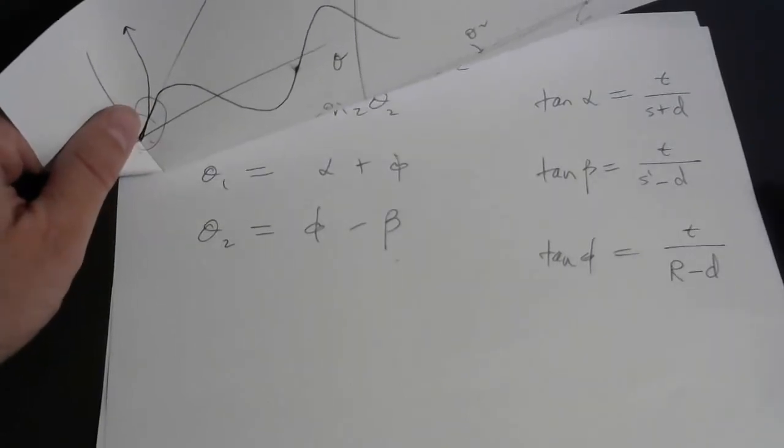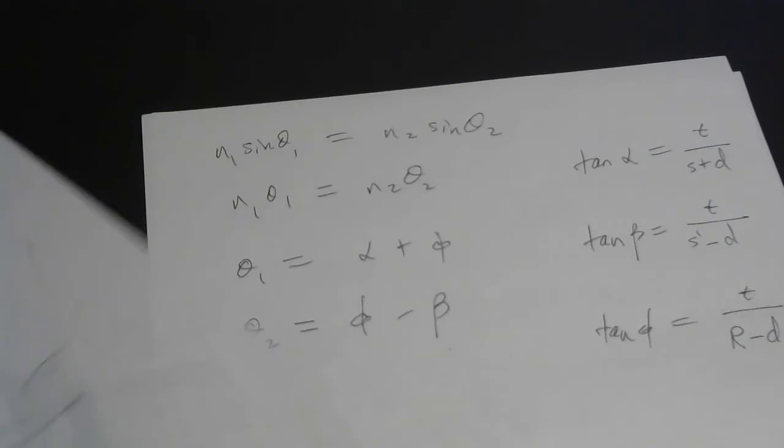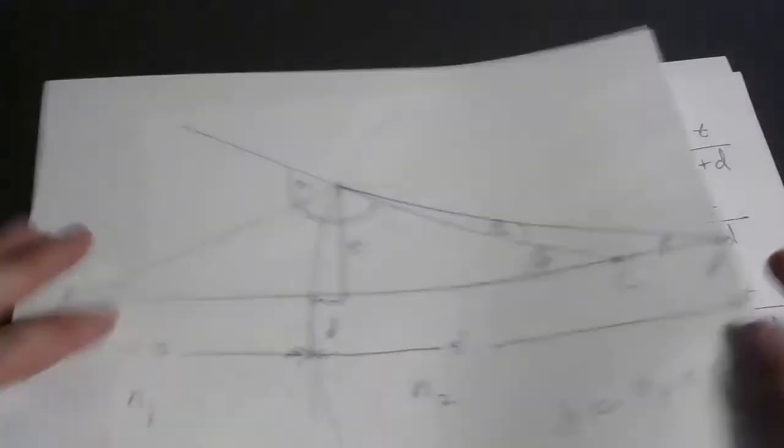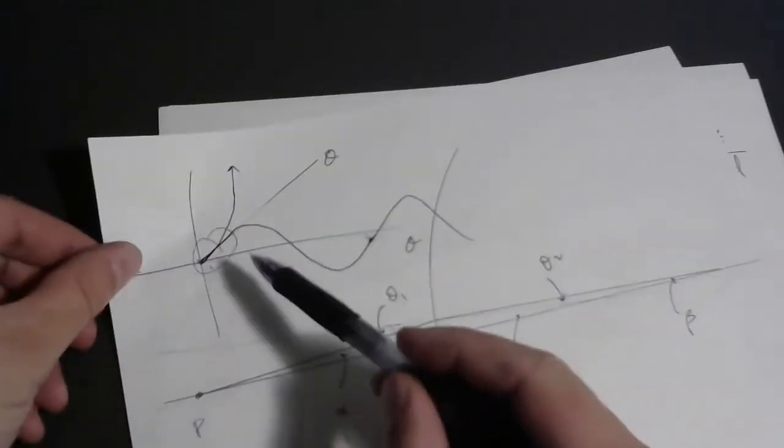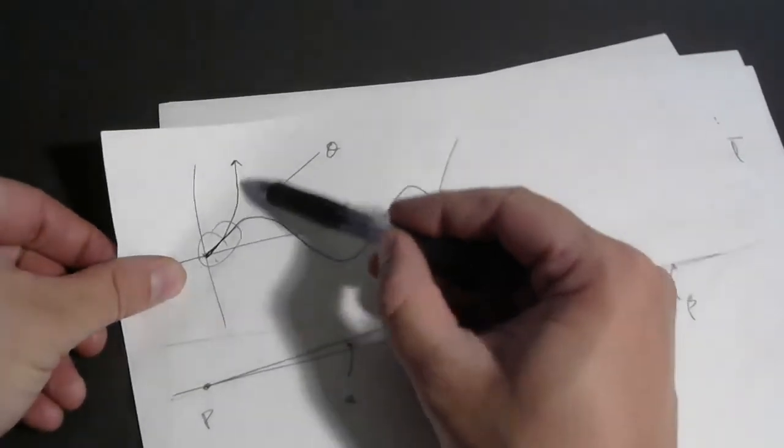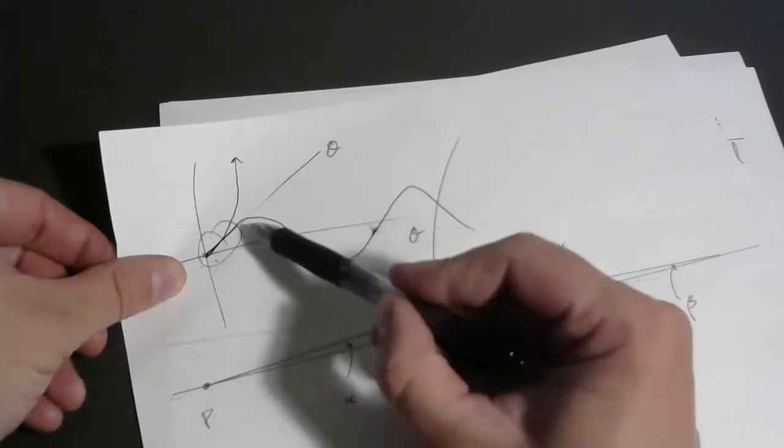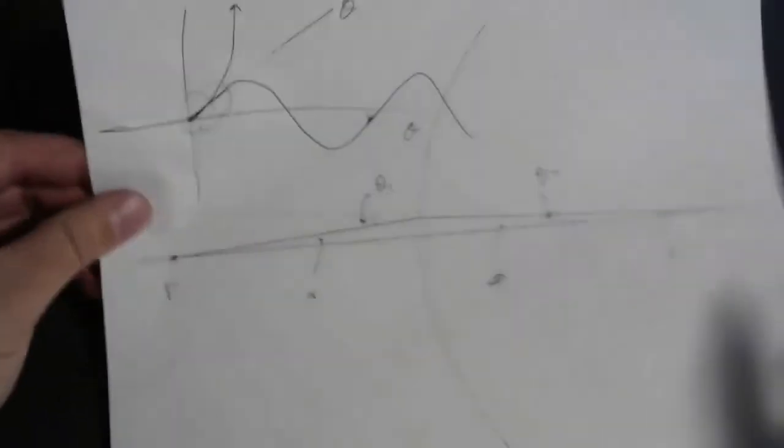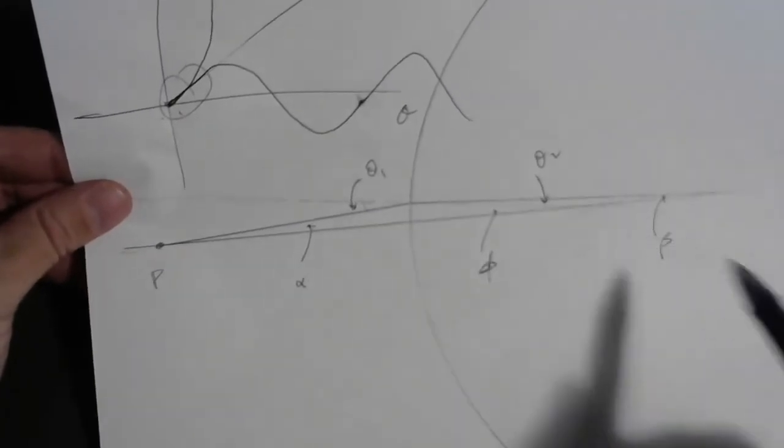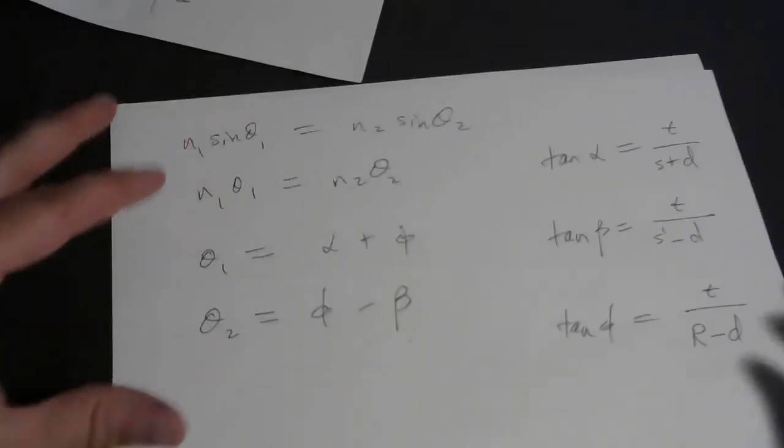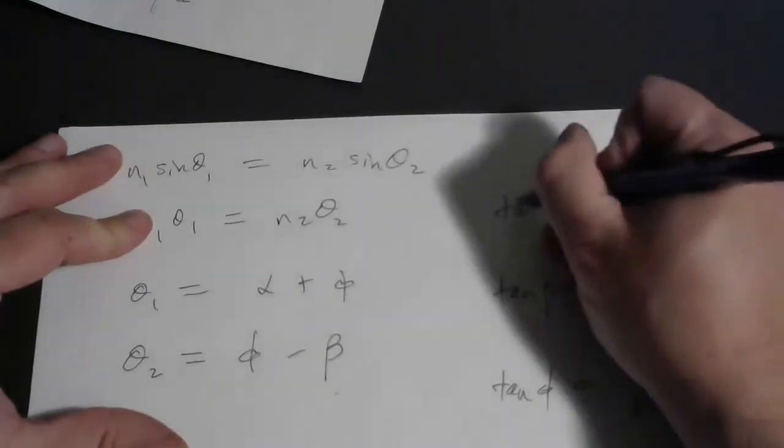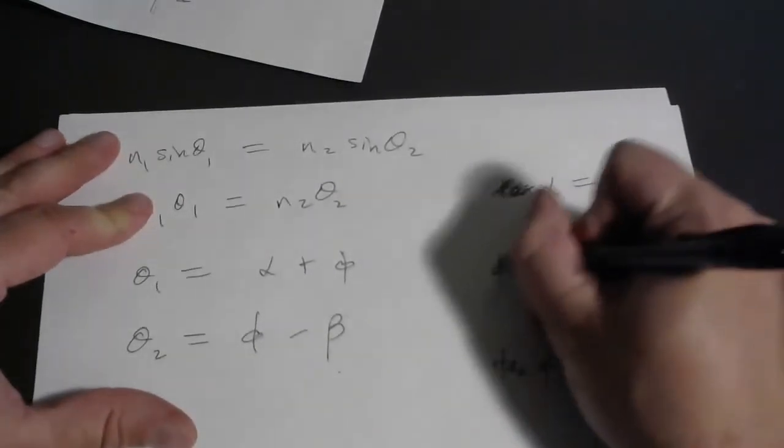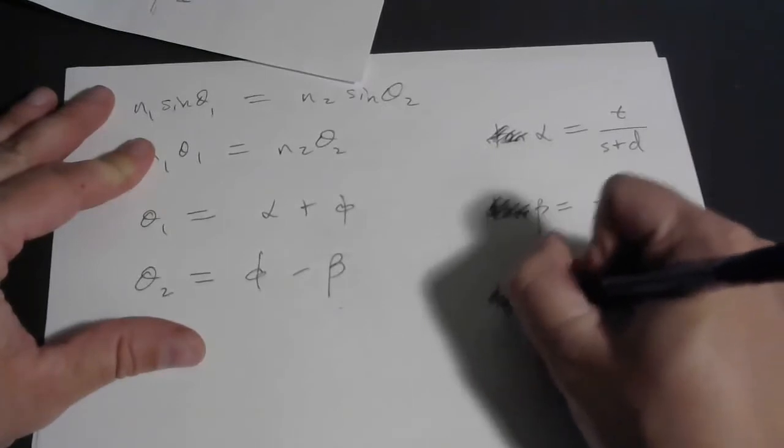Well, what do we do next? I think we have to build the small angle approximation again. Keep in mind that tangent of an angle is practically equal to that angle as long as we're talking about small angles. We are talking about small angles, as I hope you were convinced by this diagram. All of these angles are small because the ray is paraxial. So instead of tangent of alpha, I could just call that alpha. That's beta and that's phi.